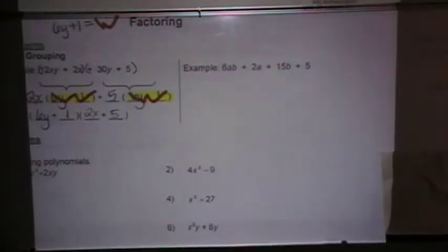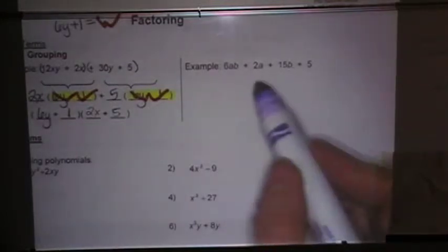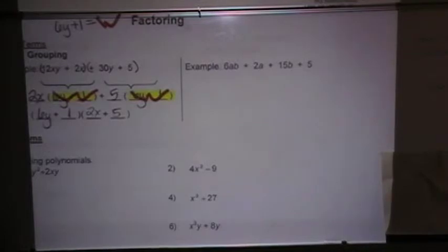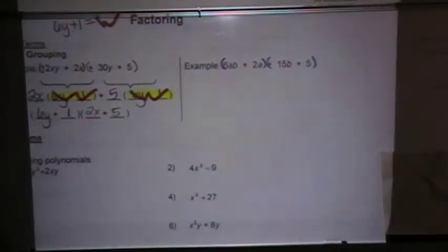So that means there are 4 terms. It's not a binomial, so it can't be a difference of 2 squares or sum or difference of cubes. It's not a trinomial, so it can't work with factor sum chart. So I'm going to group and factor by grouping.